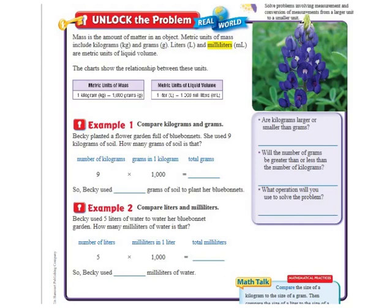Hi there, everybody. This is Ms. Nelson here, and today we are doing Lesson 12.7 in our 4th grade Florida Go Math Books. Lesson 12.7 is about metric units of mass and liquid volume. If you're in my class, you should be filling out page 471 as we go along.